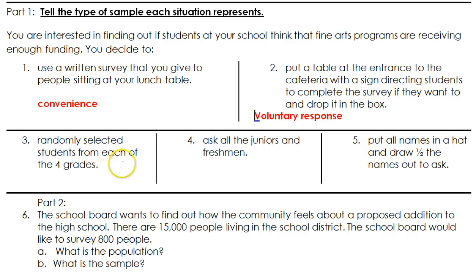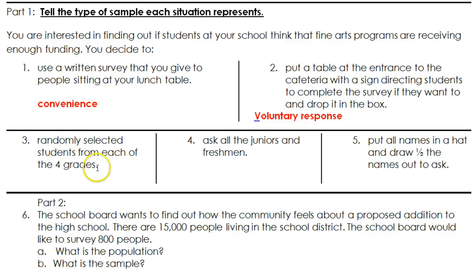Number three: randomly selected students from each of the four grades. It sounds like we're guaranteeing that we have students from each of the four grades, so that makes this stratified random.